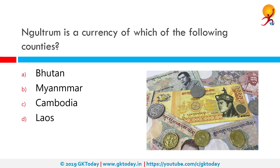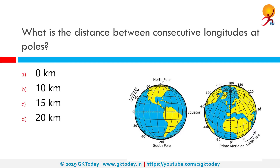Ngultrum is the currency of which of the following countries? The correct answer is Bhutan. It is the currency of the Kingdom of Bhutan and is subdivided into 100 Chetrum. The Royal Monetary Authority of Bhutan is the minting authority, and it is currently pegged to the Indian rupee at parity — that is, one Indian rupee is equal to one Ngultrum.